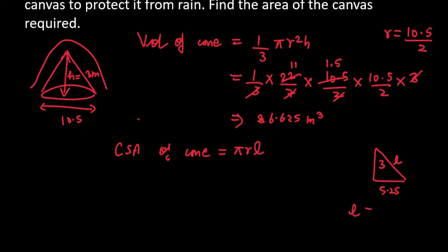So L will be equal to √(5.25² + 3²). 3² is 9 and 5.25² is 27.56 plus 9. So add them together, you will get 36.56.